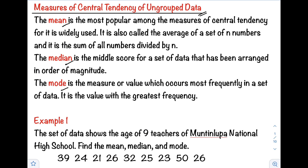Any measure indicating the center of a set of data is called measures of central tendency. Mean is the most popular among the measures of central tendency, as it is widely used. Mean is also called the average. We can get the mean by getting the sum of all numbers divided by n, where n is the number of samples.